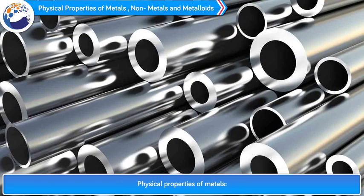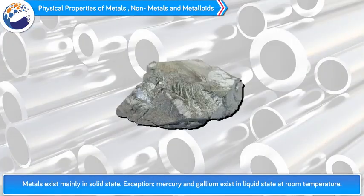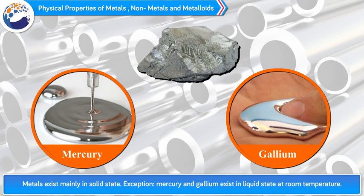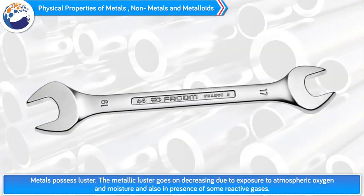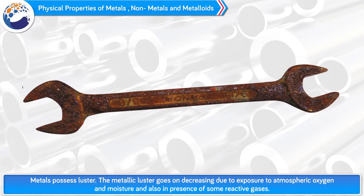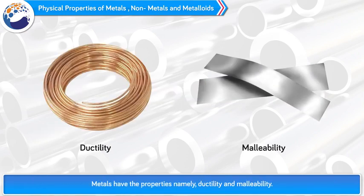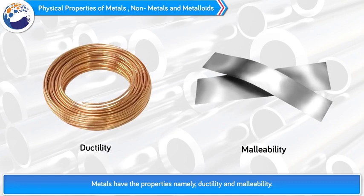Physical properties of metals. 1. Metals exist mainly in solid state. Exception: mercury and gallium exist in liquid state at room temperature. 2. Metals possess luster. The metallic luster goes on decreasing due to exposure to atmospheric oxygen and moisture and also in the presence of some reactive gases. 3. Metals have the properties namely ductility and malleability.